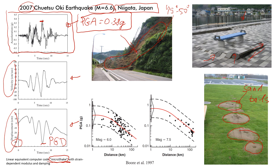We can also get peak ground velocity and peak ground displacement from here, which will give us a little bit more information. But most of the time we need to get the PGA. At the end of this video, let's do a short exercise to see how we can actually use this data.